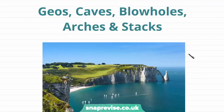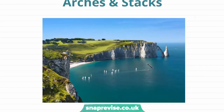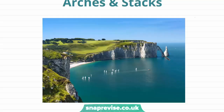The last features we're going to look at in this video are the formation of geos, caves, blowholes, arches, and stacks, which are all related features that form from each other through a series of processes. We can see this in this photograph, where down here we have geos and blowholes forming caves, and here we have arches and stacks which are separated and out in the water. These all form from the erosion of the cliff over time — starting off with a small cave, which would eventually become a stack at the end.